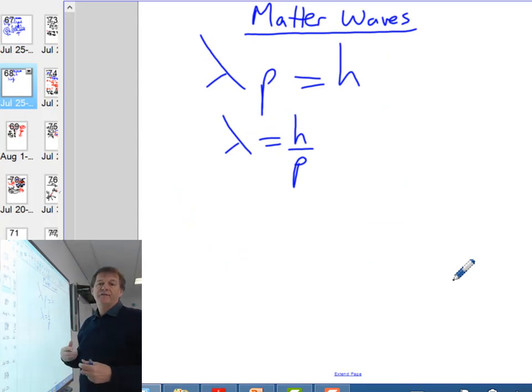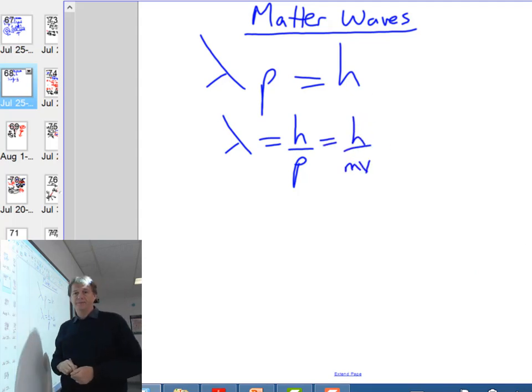Now, what de Broglie did, he said, is if light has both wave and particle properties, or momentum properties there, perhaps all matter had wave properties as well as momentum properties. So if you rearrange the formula that they're using for light, he said we could actually work out the wavelengths of objects by doing h over mv.